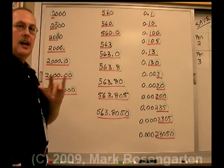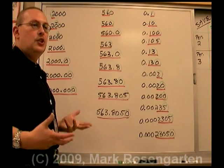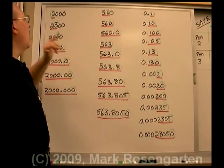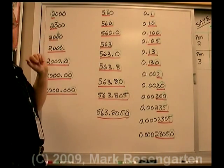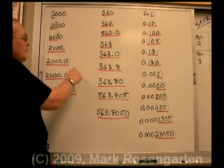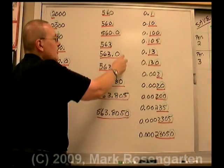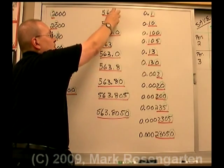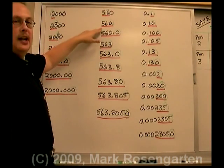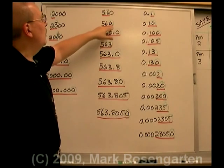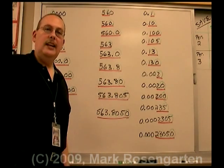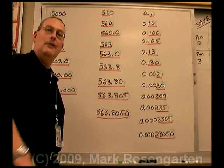So once again: if your measurement does not have a decimal point, your precision is whichever is the rightmost non-zero digit, or a zero with a line over it. If there is a decimal point, your precision is simply the rightmost place. The number of significant figures are the number of digits from the first non-zero to where the precision runs out. And that is the only rule you need for significant figures.